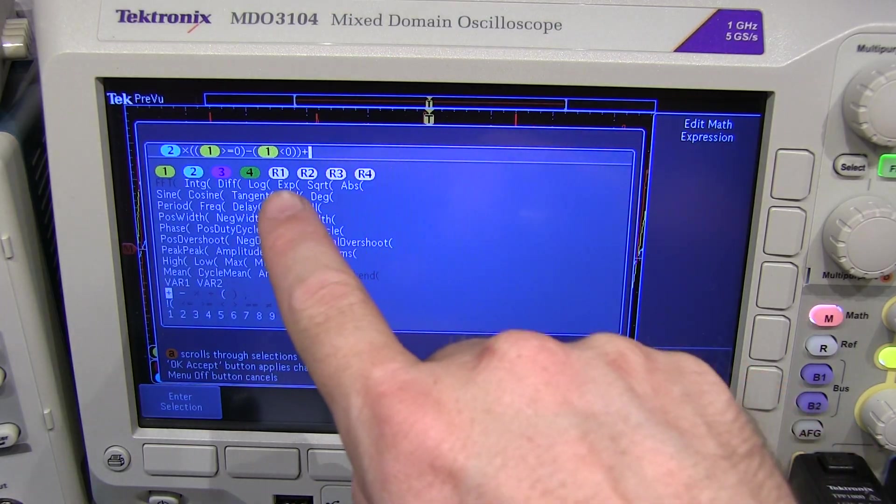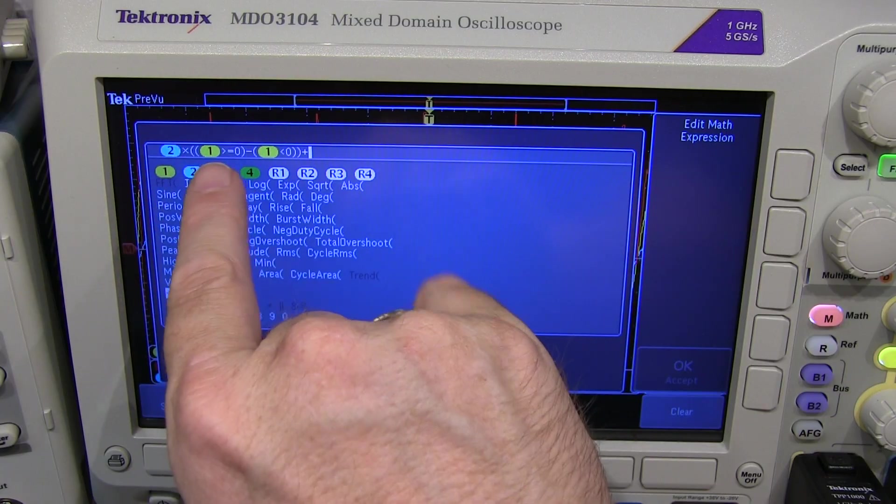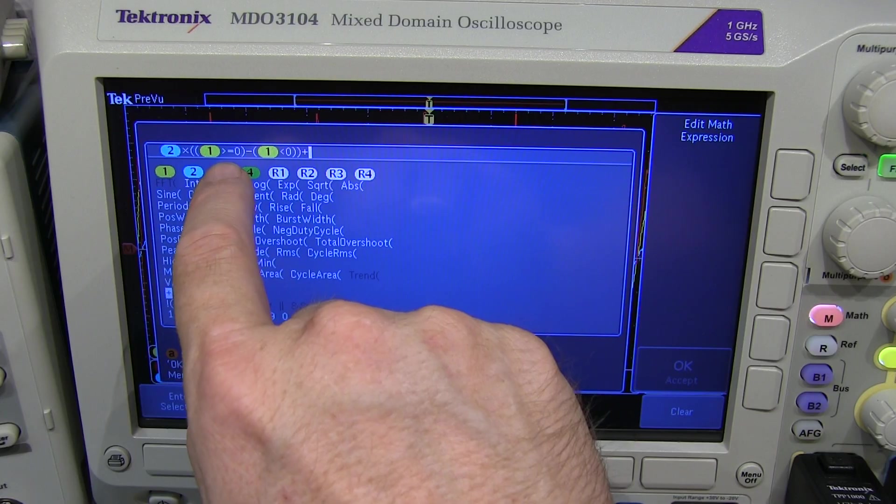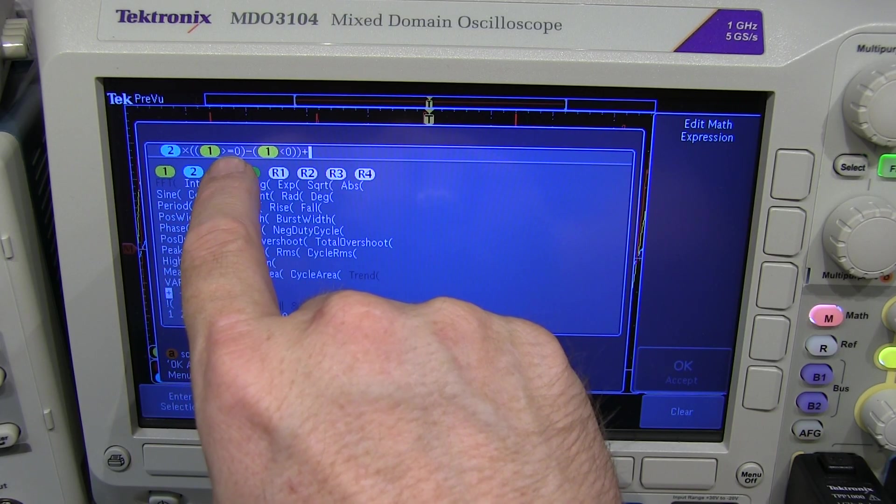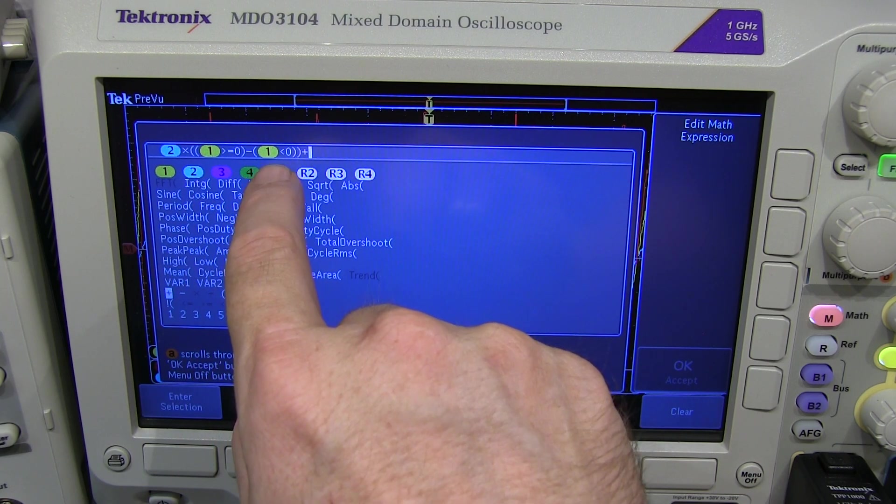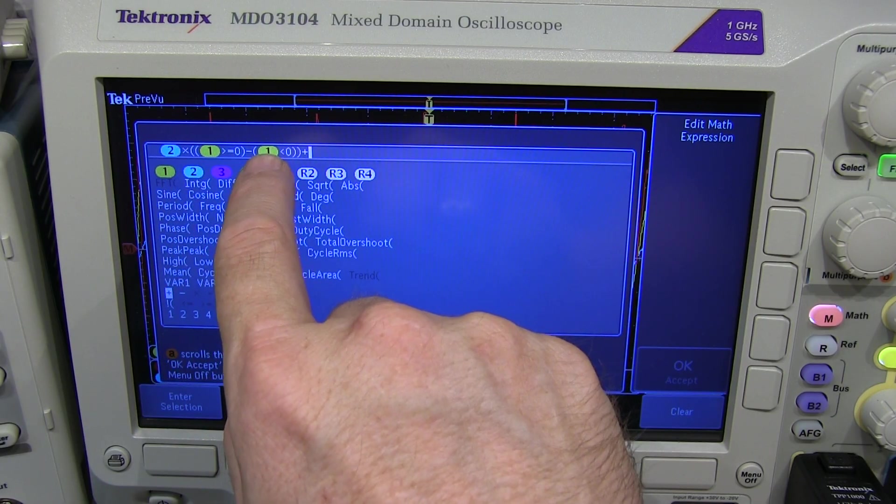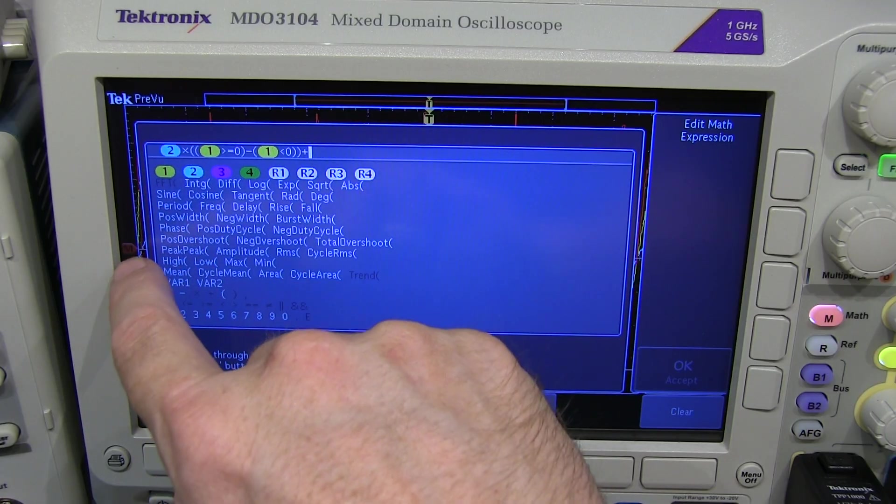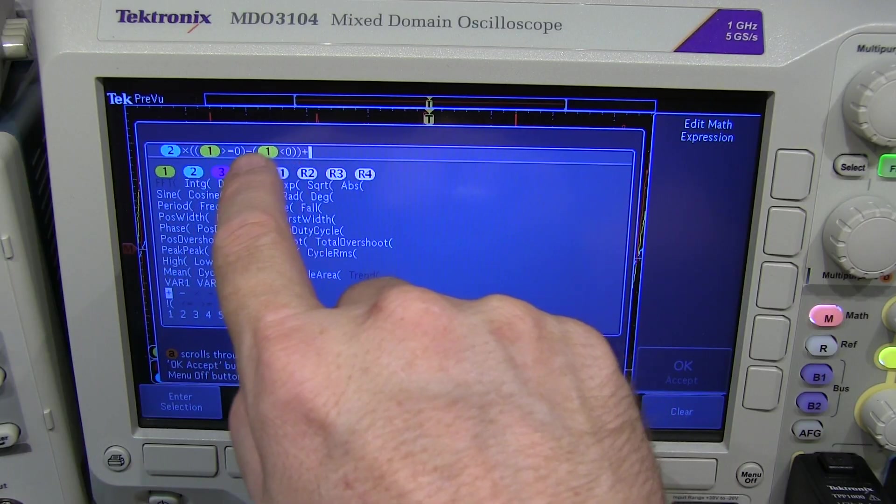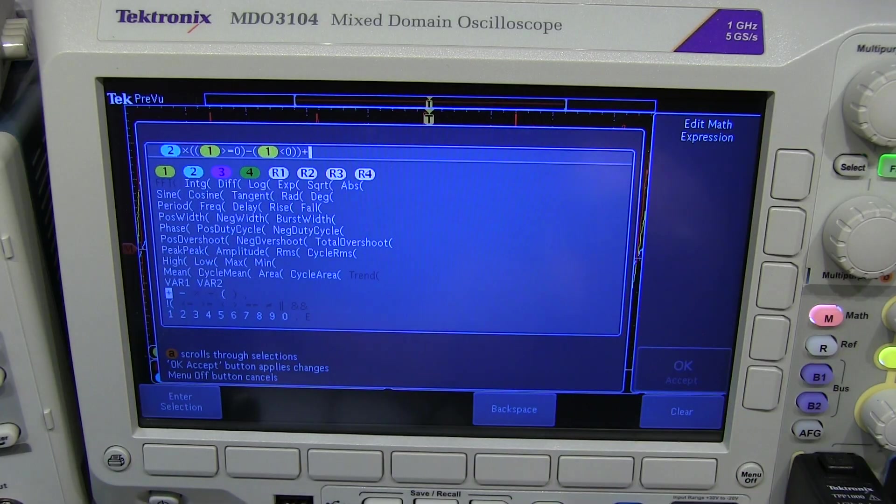So to simulate that what I did is I created this math expression here which is basically taking our RF signal channel 2 and multiplying it by this expression which is basically a logic expression looking at if channel 1 is greater than or equal to 0 that's going to be equal to 1. If channel 1 is less than 0 that'll equal minus 1. So this expression here is either going to be plus 1 or minus 1 depending on whether that local oscillator sine wave is on the positive half cycle or the negative half cycle. So this is a quick way of multiplying the RF signal by plus 1 or minus 1 at the rate of the local oscillator signal.